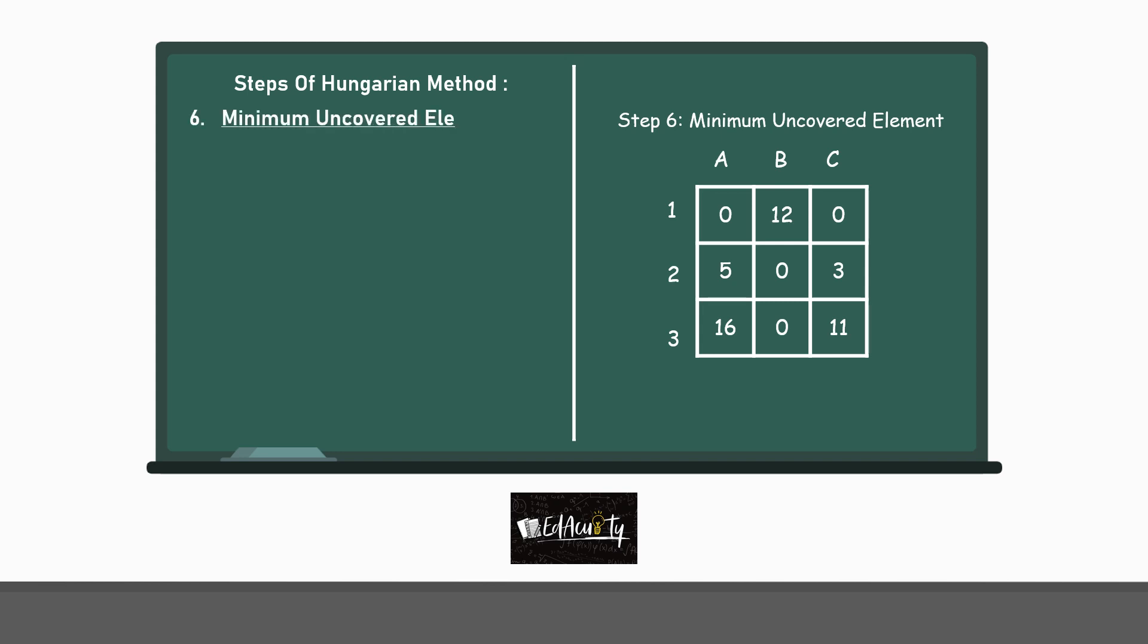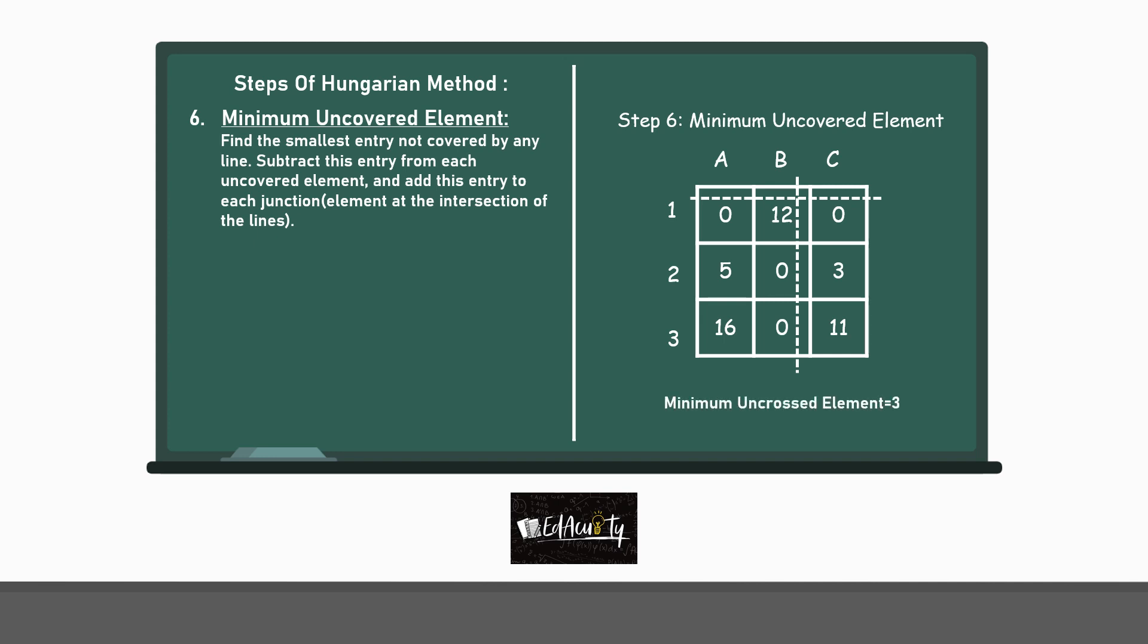Step 6 is finding the minimum uncovered element. It states that find the smallest entry not covered by any line, subtract this entry from each uncovered element and add this entry to each junction that is the element at the intersection of the lines. So, the minimum uncovered element here is 3. The junction element is 12 and adding 3 to it, we get 15. These are the other uncovered elements and after subtracting 3 from each one of them, this is what we get. So, this is the resultant matrix that we obtain.